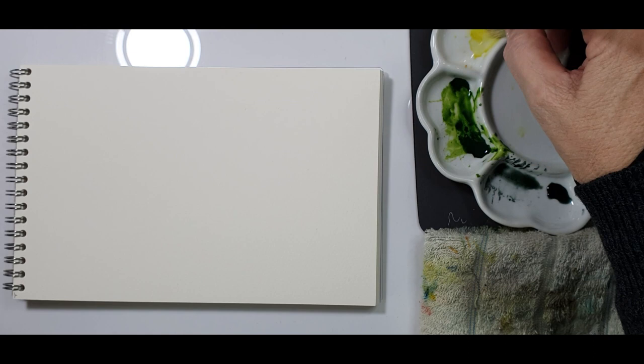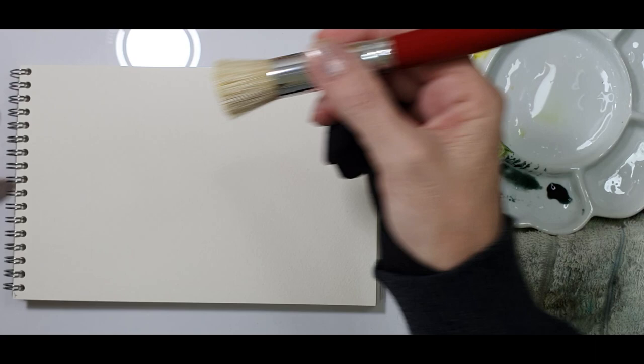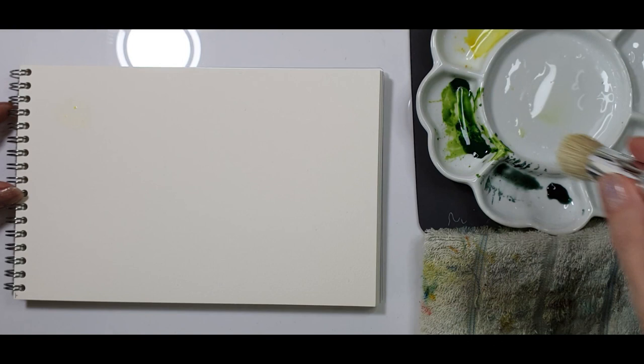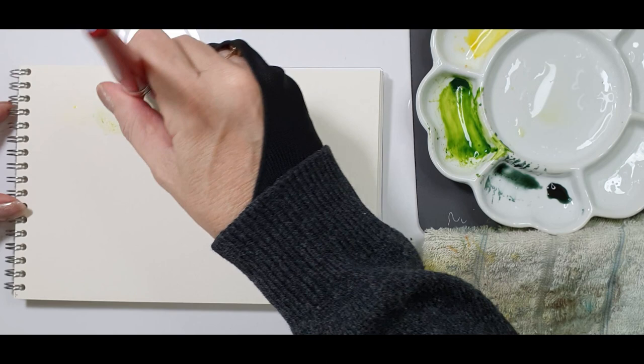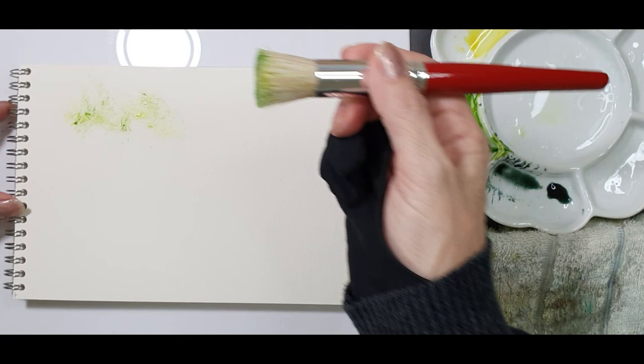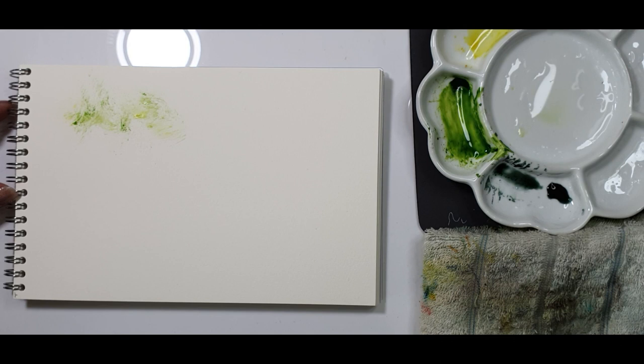I'm going to start off with the big one and show you what basic things you can do with it. First I'm just dabbing a few dots of yellow and then I dip the brush into the sap green and create some textures. You can swivel it, you can just press down and already there's texture that you don't get with a normal brush.